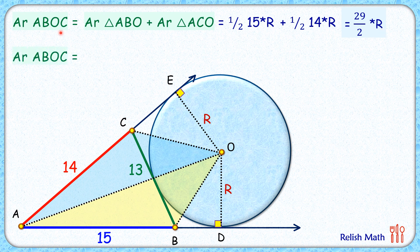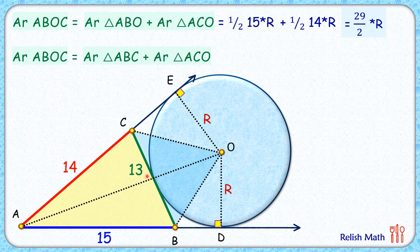The same area of quadrilateral ABOC can also be taken as the sum of triangle ABC (the yellow triangle) plus triangle COB (the blue triangle). For triangle ABC, the sides are 13, 14, and 15. Using Heron's formula — calculation not shown — the area works out to 84 centimeters squared.